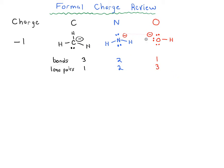Okay, so each of these have the same charge, a charge of minus one. You can see basically decrease the number of bonds, increase the number of lone pairs.